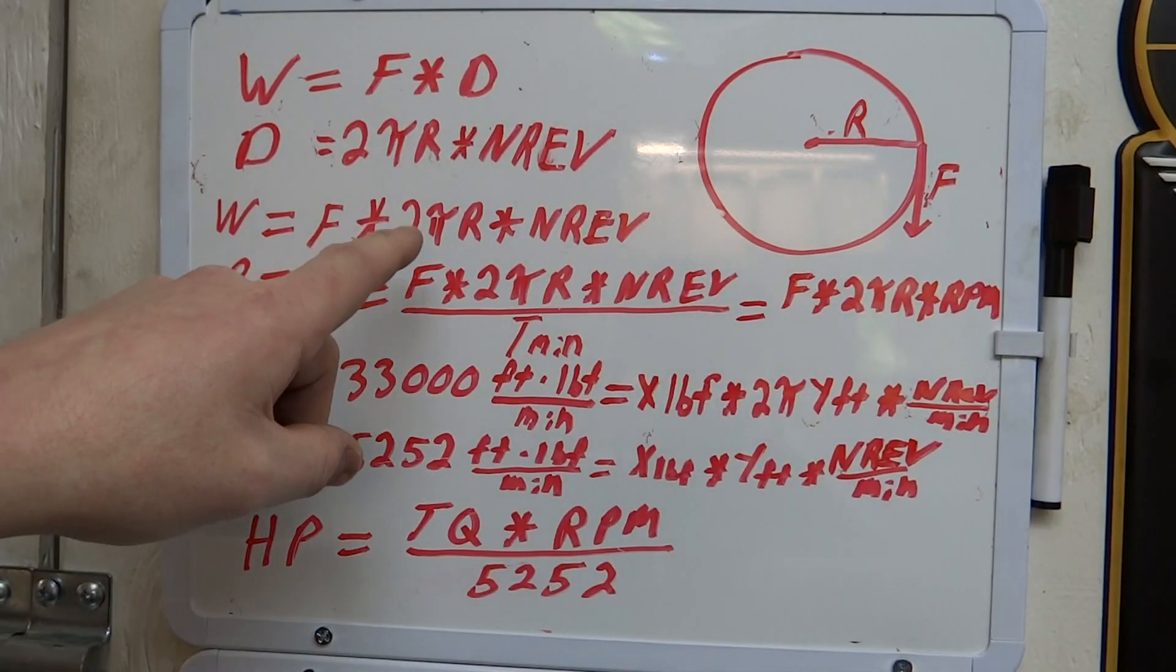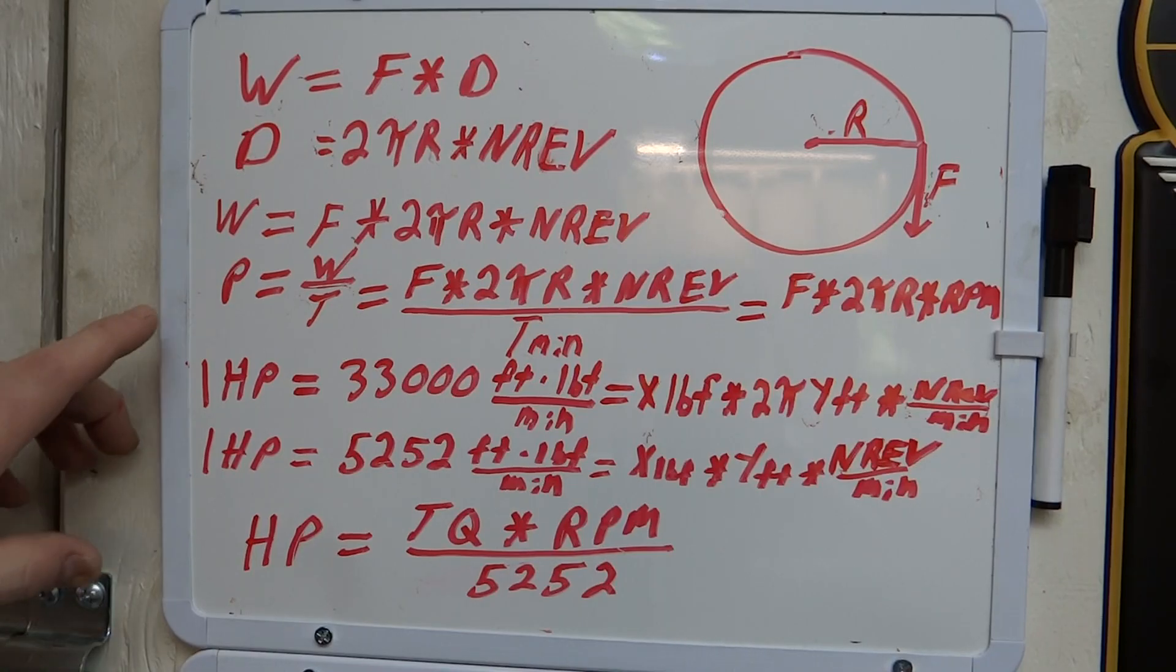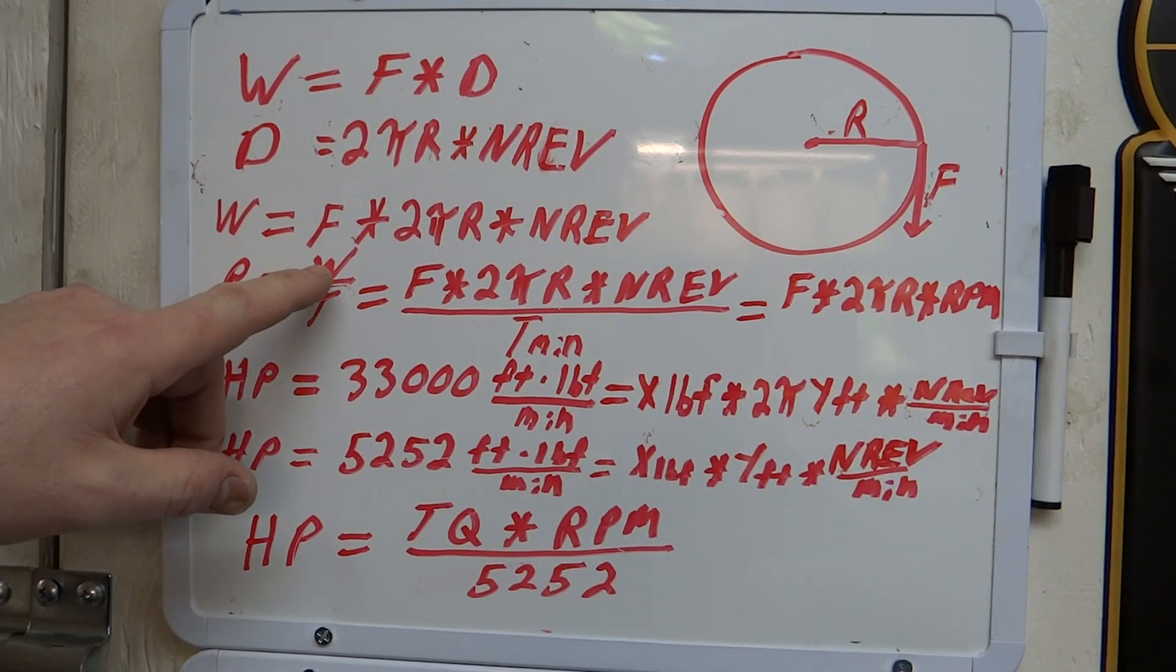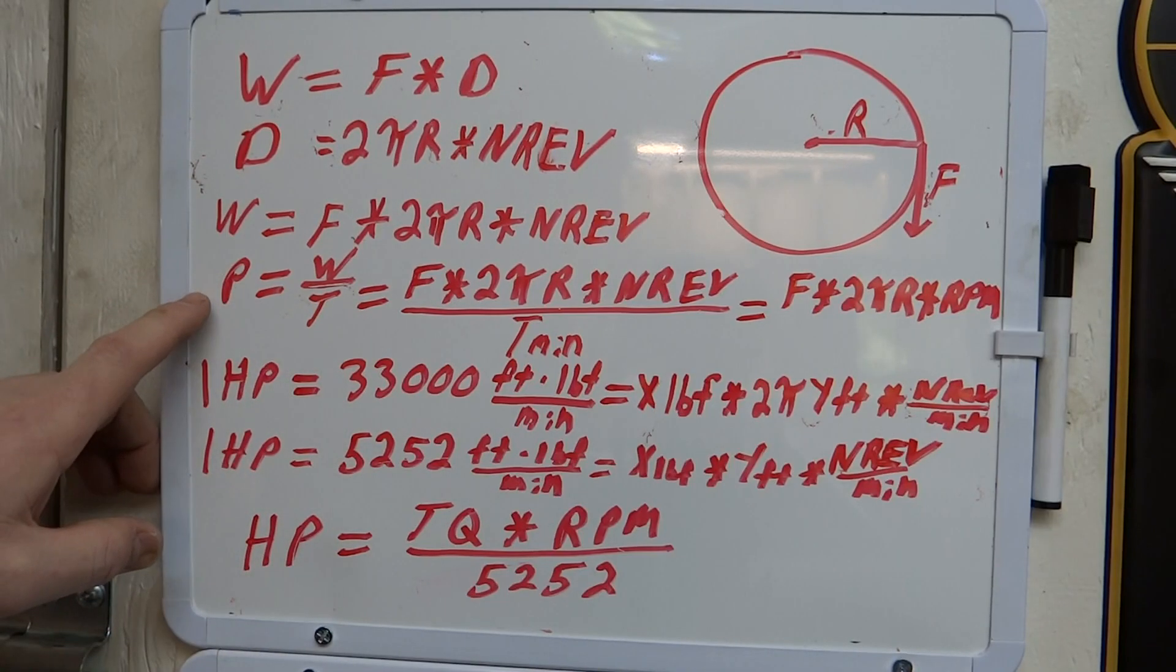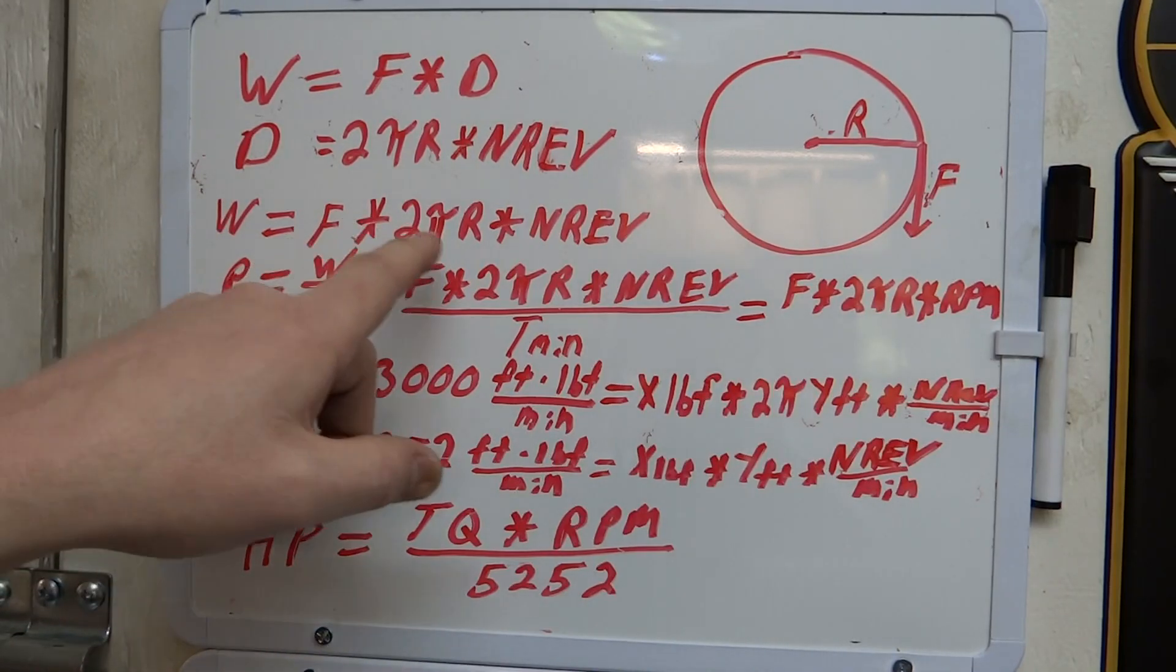Now we're looking for horsepower in terms of torque, right? So we need to define what power is. Power is the amount of work that was done divided by however long it took to do it. We're going to be using minutes in terms of units for time. So we're going to write power in terms of work over time, and that's going to be force times 2πR times the number of revolutions divided by time in minutes.